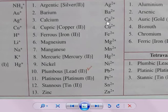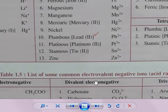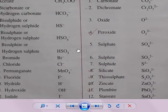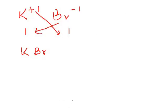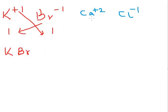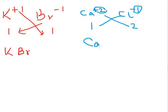Next, let's write the formula for calcium chloride. Calcium is Ca²⁺ and chloride is Cl⁻. Using the cross-multiplication method, we take the 2 from calcium and write it below chloride, and the 1 from chloride and write it below calcium. Calcium gets subscript 1 — we don't need to write 1 — and chloride gets subscript 2. So the formula for calcium chloride is CaCl₂.